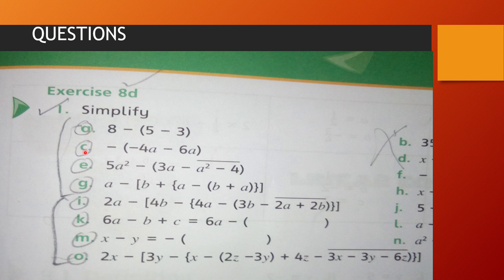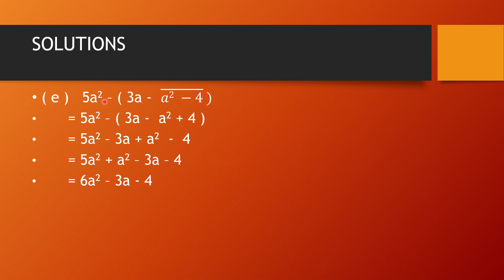Ab Exercise 8D par aayein. A aur C part pichle lecture mein kar chuke hain. Ab E part karna hai. Question number 1 ke circled parts karne hain. B, D, F, H, J, L, N wale parts cross hain — woh nahi karne. E part: 5a² minus small bracket, 3a minus bar bracket over (a² minus 4), end small bracket.